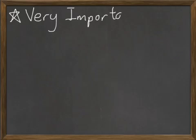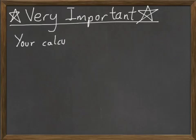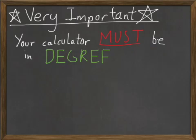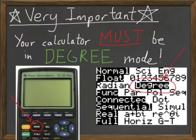Before we go to the next example, here's something else that's very important. Your calculator absolutely positively must be in degree mode. You can change it to degree mode by pushing the mode button on your calculator. This is very important because the calculator defaults to radian mode. Make sure you're in degree mode.